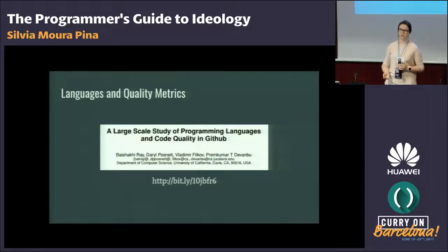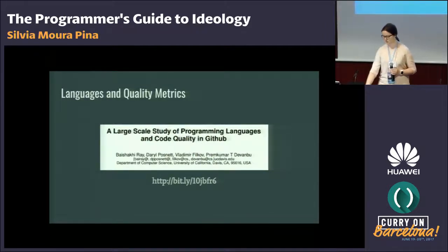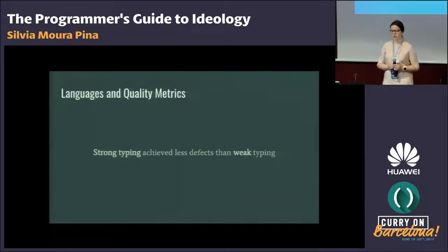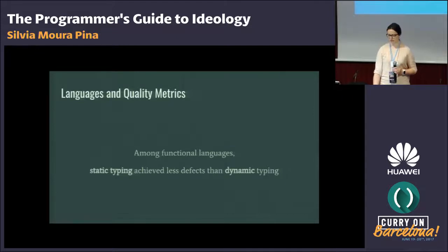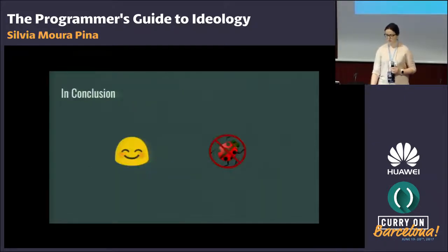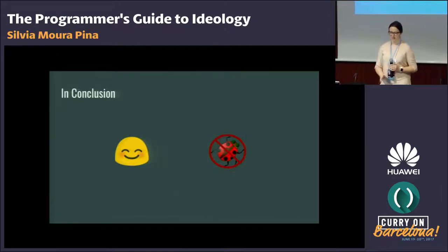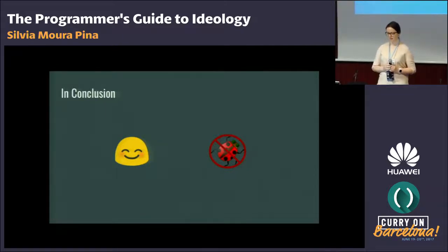The data was used to determine the effects of language features on the number of defects or errors found in the code, using methods including multiple regression, clustering, and visualization. The main takeaways are three: first, strong typing achieved fewer defects than weak typing; second, functional languages got somewhat better results than procedural languages; and third, among functional languages, static typing was found to achieve fewer defects than dynamic typing. So there is at least some evidence that following the principles of functional programming ensures some fundamental properties of code quality are satisfied, and we achieve code that is optimized for human processing — a win-win situation.